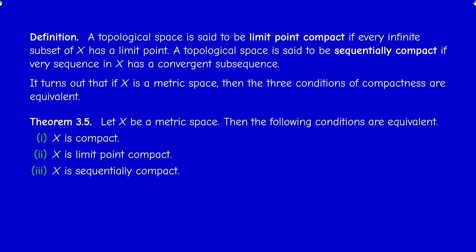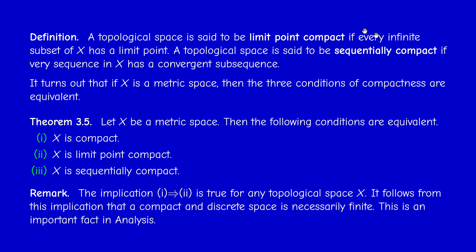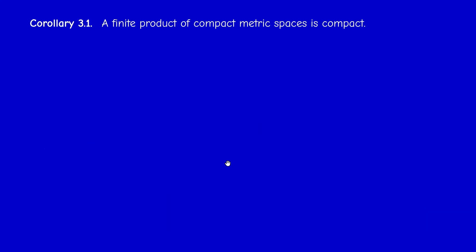In the case of a metric space, all three notions of compactness are equivalent — this is the main theorem of this section. This is not trivial; the proof will be given in the next video. One remark: the implication (1) implies (2) is true for any topological space, without assuming metrizability. Another way of stating this is that a compact discrete space is finite.